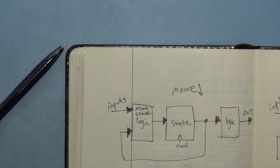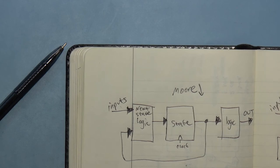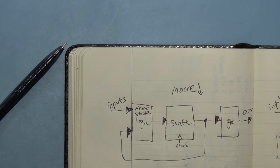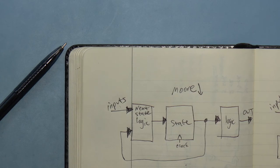Okay. Quick review. Here's what you'll see when you look up Moore state machines. The next state depends on the current state and the inputs. And the outputs depend on the current state.